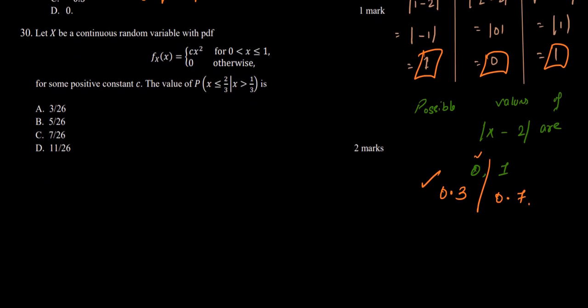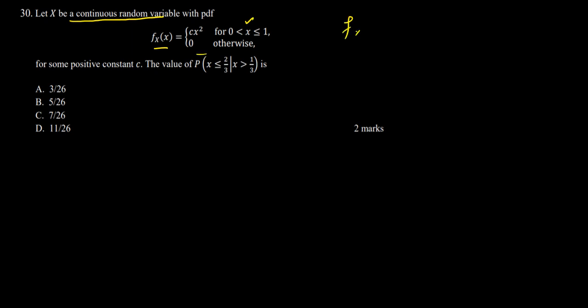Moving on to question number 30: let X be a continuous random variable with PDF f(x) = Cx² for x ∈ [0, 1] and 0 otherwise, for some positive constant C. We need to find the probability P(X ≤ 2/3 | X > 1/3).